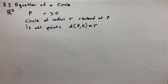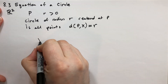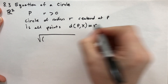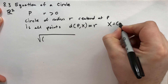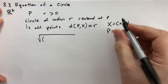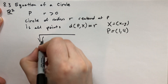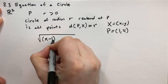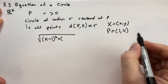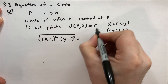So if we're going to define this, let's define the distance according to our formula. The distance is the square root of — let's say x is the point (x, y) and P is the center point. In this case, let's say the center point is (1, 4). So we're going to have the square root of (x minus 1) squared plus (y minus 4) squared, and that has to equal the distance R.